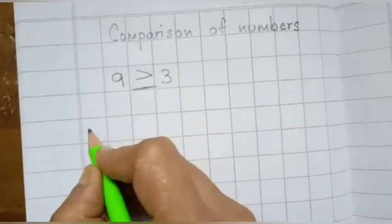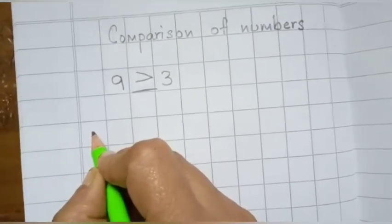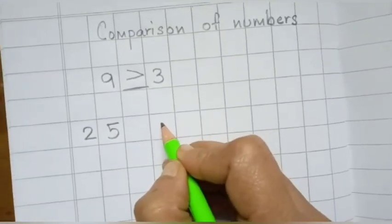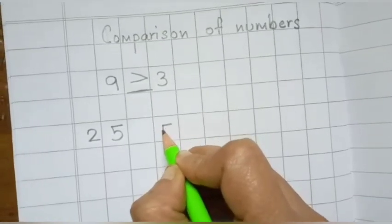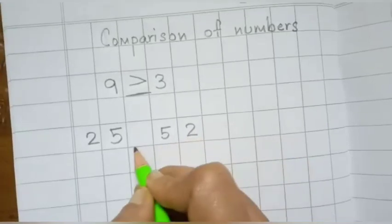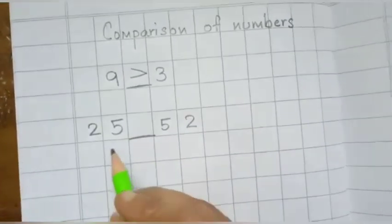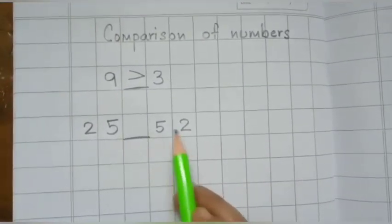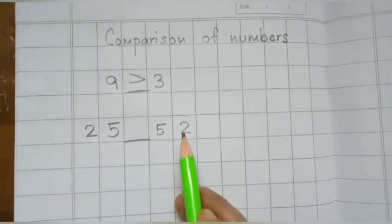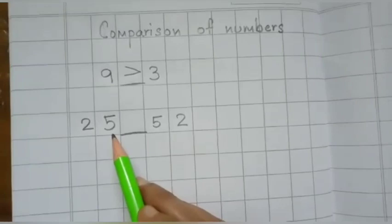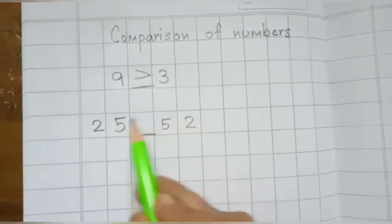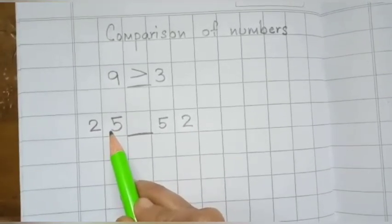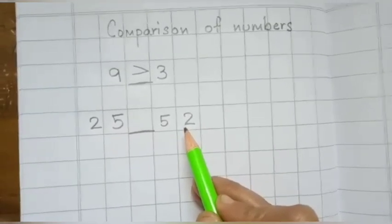Let me take another example. Suppose we take the number 25 and the number 52. Now we will compare these two numbers — 25 on one side and 52 on the other side. Tell me, which number is bigger: 25 or 52? 52 is bigger. Very good — 52 is bigger than 25. Think of 52 as the big fish and 25 as the small fish, because 25 is the small number and 52 is the big number.